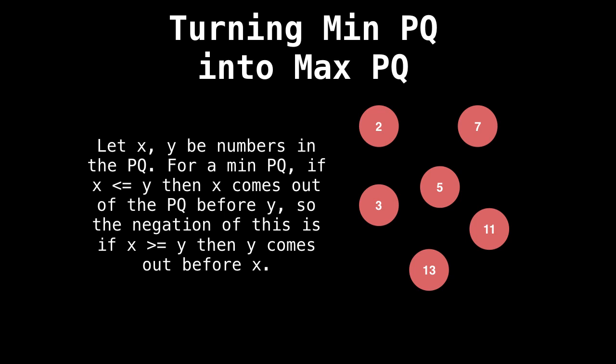Wait a moment, you say, isn't the negation of x is less than or equal to y just x greater than y, and not x is greater than or equal to y? Well, not for comparators. You see, if x is equal to y, whether or not the comparator is negated, x should still equal y.